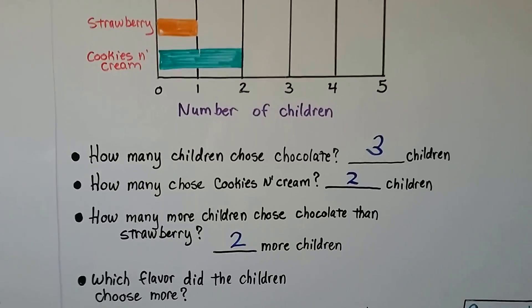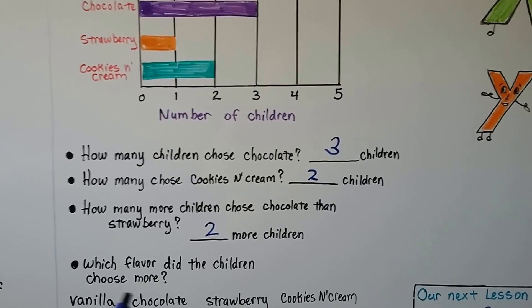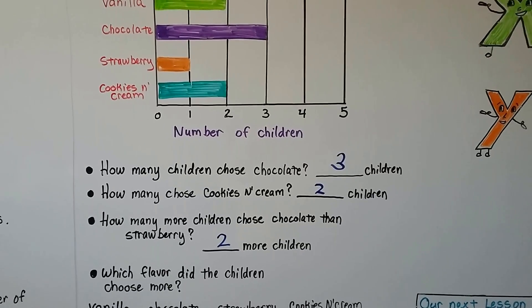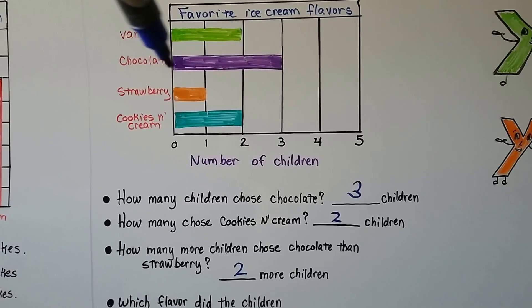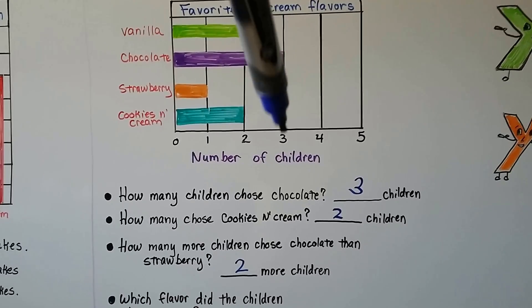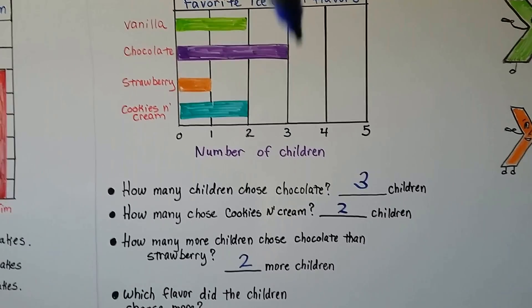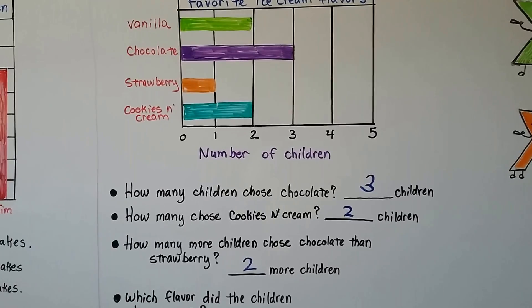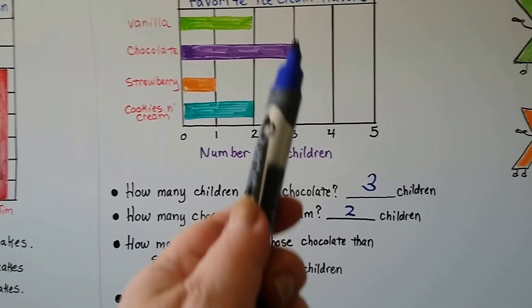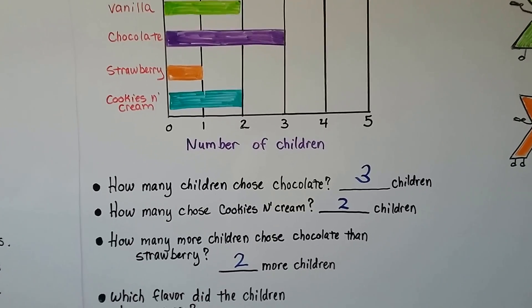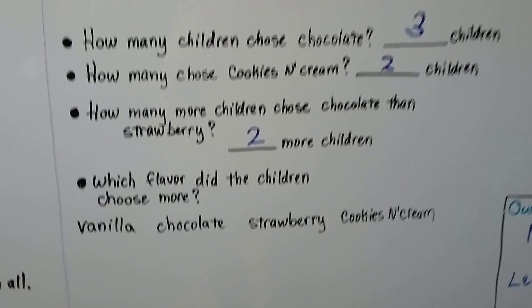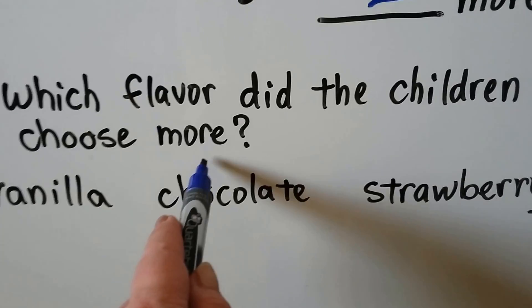Which flavor did the children choose more? Vanilla, chocolate, strawberry, or cookies and cream? We look at the graph, and we look at the bar that's sticking out the most. Chocolate. That's the one that's the farthest on the scale. It's at a three, and the other ones are way back here. So our answer is chocolate.